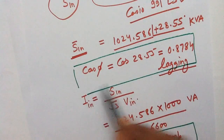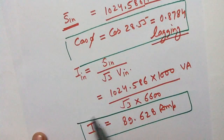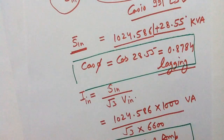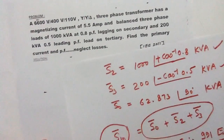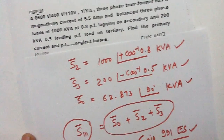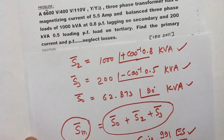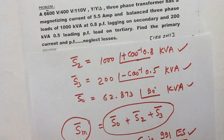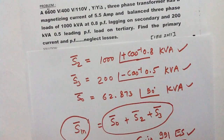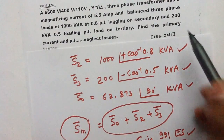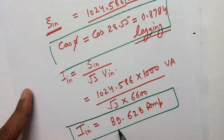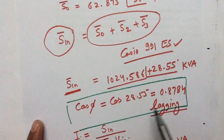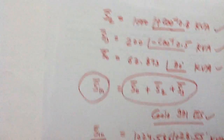The value of the input power factor is 0.8784 lagging, and the value of the primary current is 89.628 ampere. In this way, using the technique of complex power balance, we have solved this problem and obtained both answers.